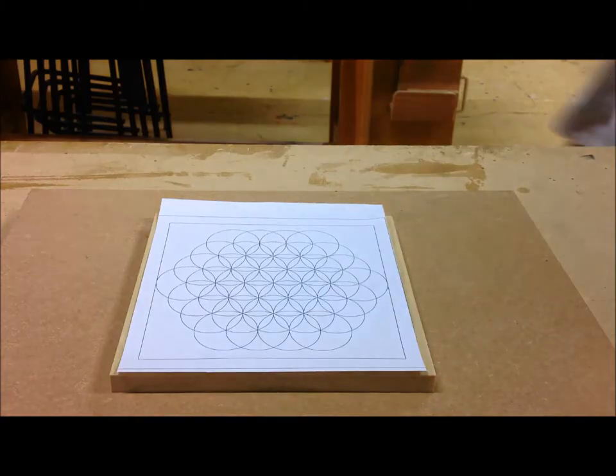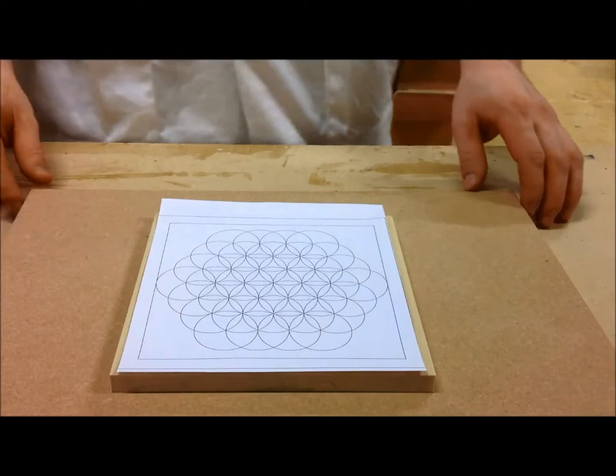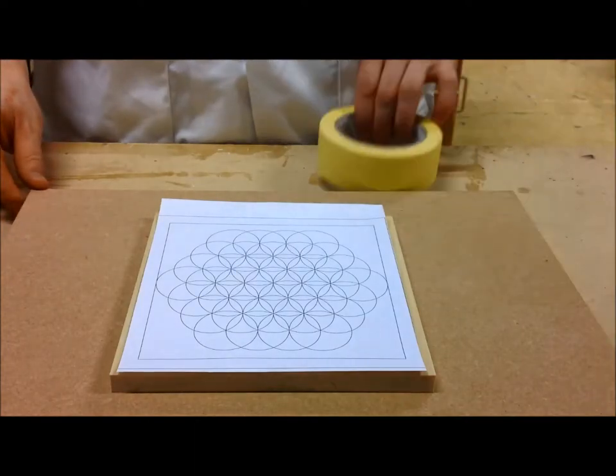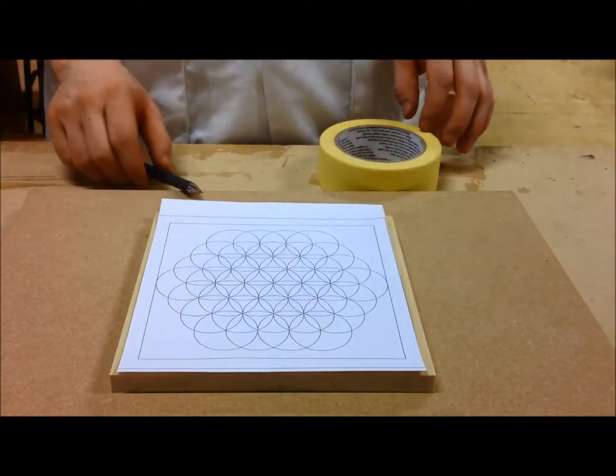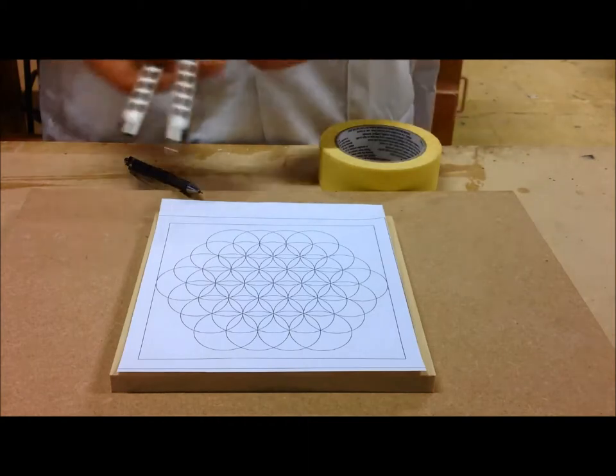In order to transfer this chip carving pattern to your workpiece, you will need masking tape, a pencil, a compass, and some carving paper.